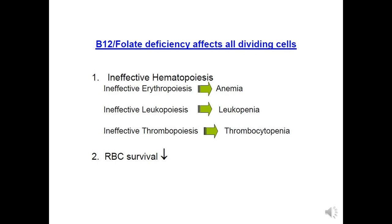Folate deficiency affects all dividing cells, resulting in ineffective hematopoiesis. Ineffective erythropoiesis causes anemia, ineffective leukopoiesis causes leukopenia, and ineffective thrombopoiesis causes thrombocytopenia. RBC survival in circulation, normally 120 days, also declines. So the overall picture in severe vitamin B12 and folate deficiency on a complete blood count is pancytopenia — pan meaning whole, cyto meaning cells, penia meaning deficiency — so all three lineages (RBC, WBC, and platelets) are deficient.